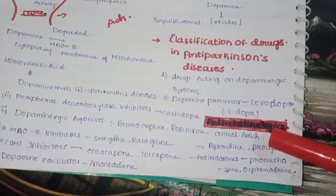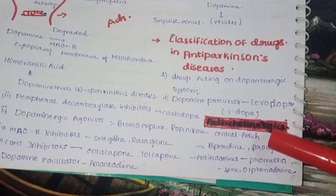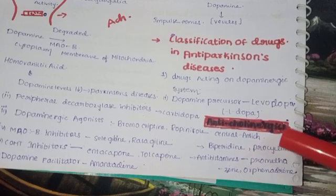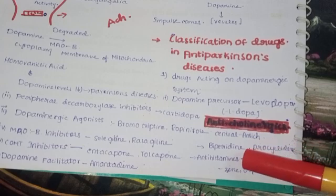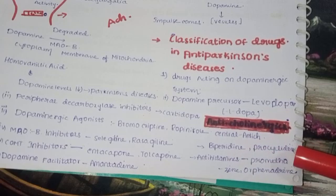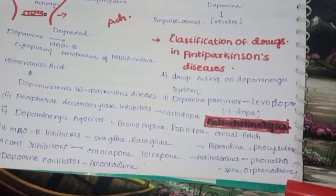Anti-cholinergic drugs act centrally more than peripherally — central action is preferred over peripheral. Examples include biperiden, procyclidine, and antihistamines such as promethazine and orphenadrine. These are the complete details about Parkinsonism. If you liked this video, please click the like button and subscribe. Thank you.